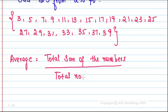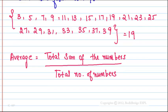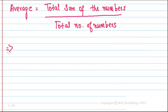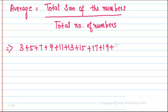Total sum of the numbers divided by total number of numbers. So here the total number is 19. So if you add all these values: 3 plus 5 plus 7 plus 9 plus 11 plus 13 plus 15 plus 17 plus 19 plus 21...